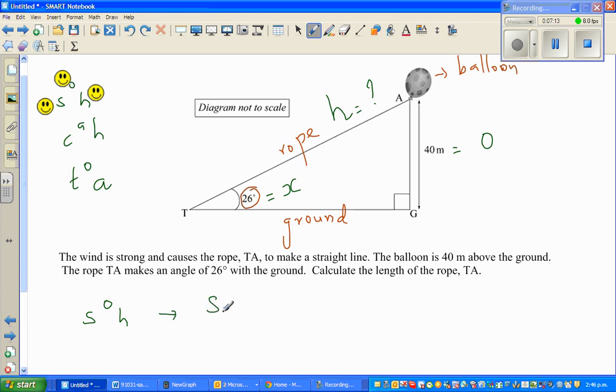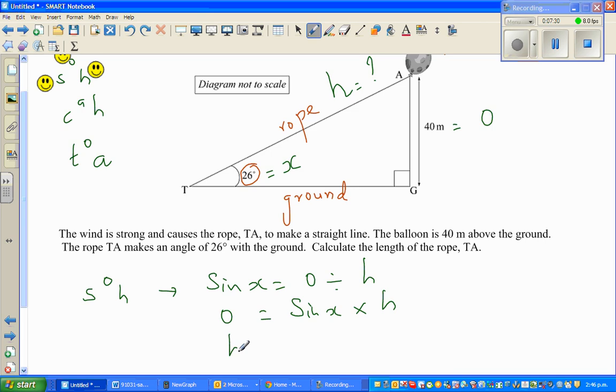One way is sine of X is O divided by H. If you want to make O the subject, if O is the subject, O is what you want to find, you do sine of X times H. And if H is the subject, this is O divided by sine. It's very easy to remember. Only if you know the SOH-CAH-TOA formula, you can make three formulas out of one formula.